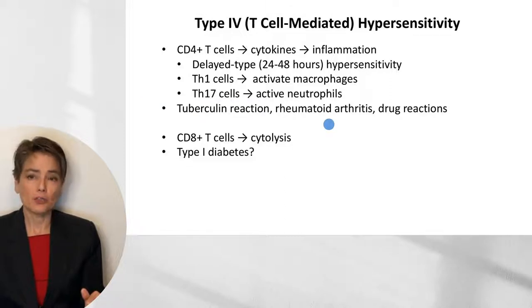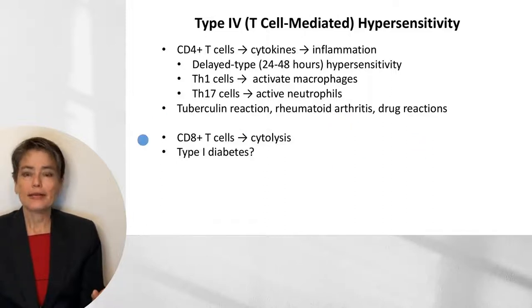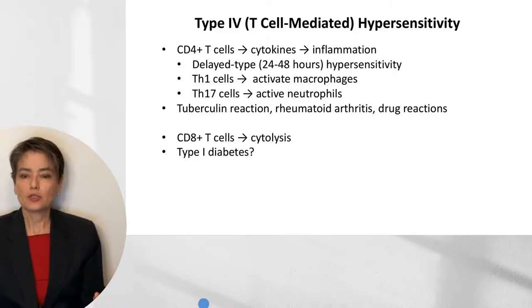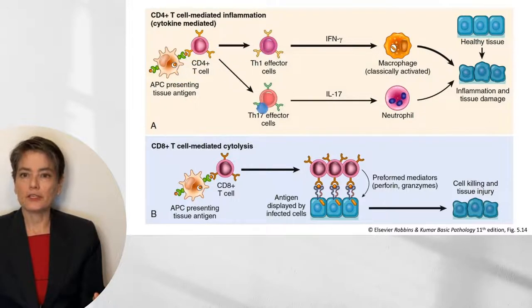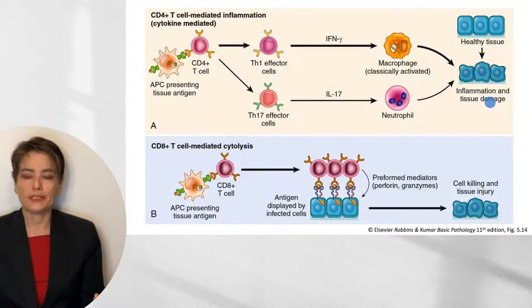Examples include the tuberculin reaction, rheumatoid arthritis — which has a bonus type 3 hypersensitivity component — and drug reactions. CD8-positive T-cells also play a role through direct cytolysis, and are thought to play a role in type 1 diabetes. In the figure from Robbins-Kumar, our CD4-positive T-cell responds to tissue antigen, differentiating along Th1 or Th17 lineages. Th1 effector cells generate interferon-gamma, stimulating macrophages along the classical activation pathway to cause inflammation and tissue damage. Th17 effector cells elaborate IL-17, recruiting and activating neutrophils, again causing inflammation and tissue damage.